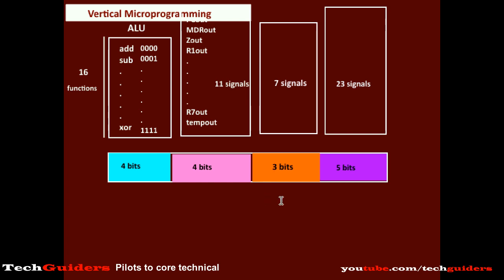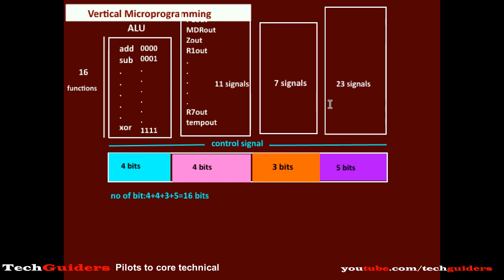So in this control signal field, how many bits are required? 4 plus 4 is 8, plus 3 is 11, plus 5 is 16 — only 16 bits are required. In contrast, if we use the horizontal approach, how many bits are required? 16 plus 11 is 27, plus 30 is 57 — 57 bits are required in the horizontal approach. So the number of bits in the control signal field can be significantly reduced, and hence the micro instructions can be kept shorter.